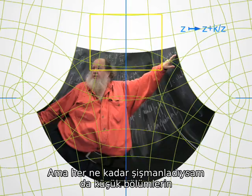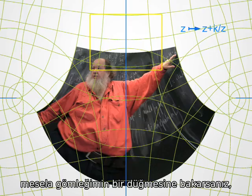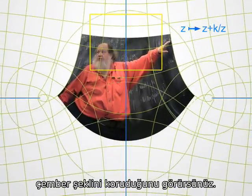But note once more that, even though I got bigger, the shapes of small parts did not change. For instance, if you look at a button on my shirt, it keeps a circular shape.